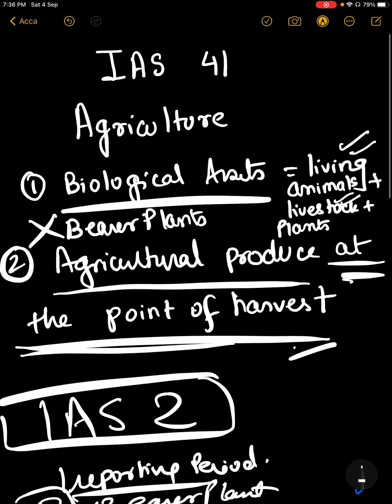Remember that agricultural produce is included in IAS 41 at the point of harvest. After harvest, it's included in inventory.